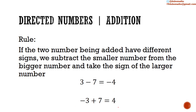Conversely, if one number is negative and one positive, we subtract the smaller from the bigger number and take the sign of the larger number. Here we have positive 3 added to negative 7. We have a positive sign and a negative sign — the signs are different — so we subtract the smaller from the bigger: 7 subtract 3 equals 4. The bigger number, 7, has a negative sign, so the answer has a negative sign: negative 4.